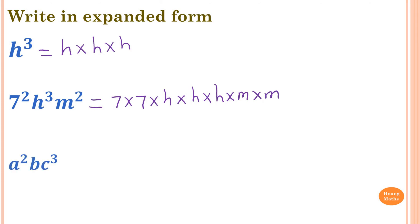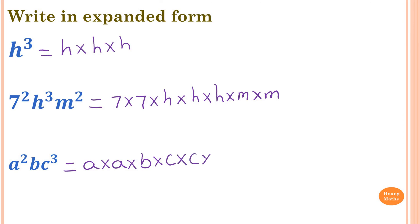A squared times B times C to the power of 3. So A squared is A times A. B is just times B. And C cubed is C times C times C.